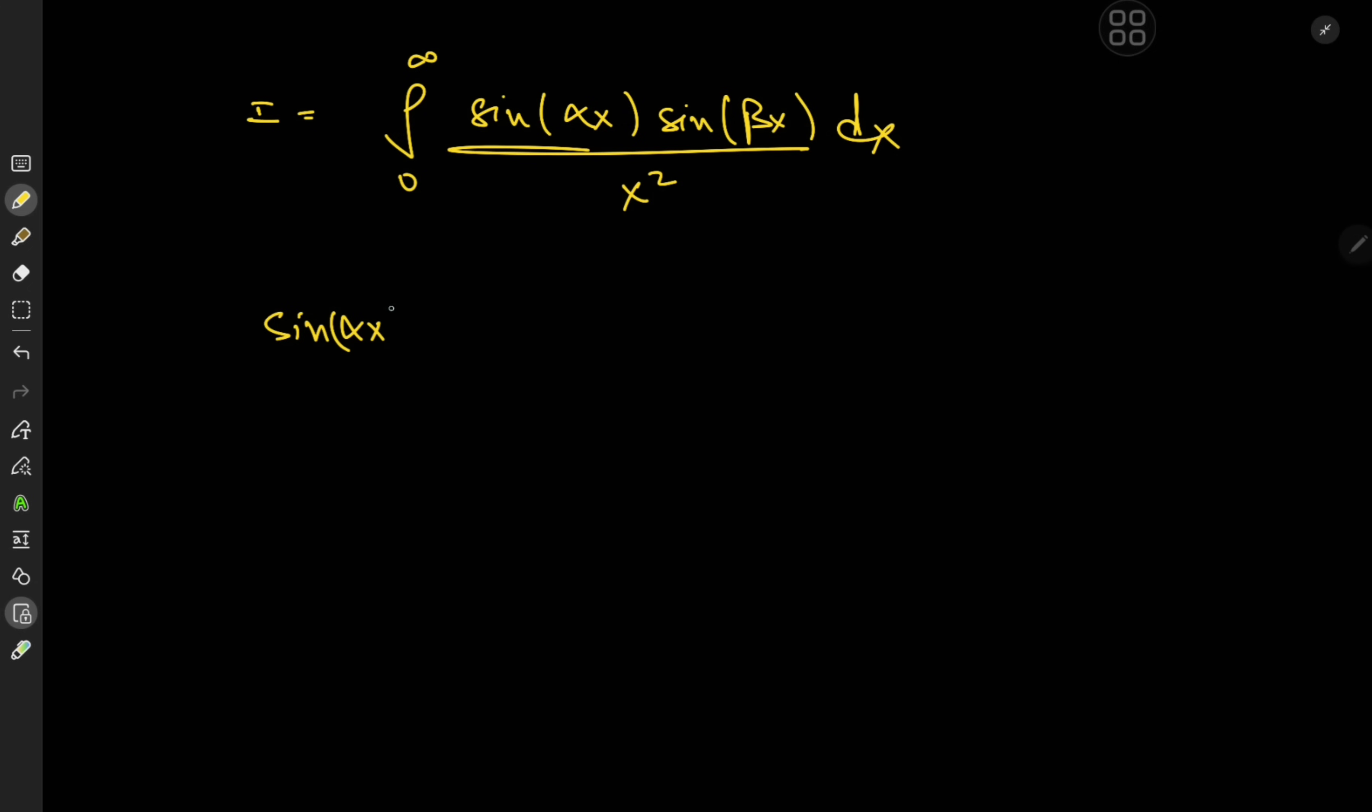That is we need sine of alpha x times the sine of beta x. So we can get a product of sine functions if we have one half of cosine of alpha minus beta x minus cosine of alpha plus beta x. That way the cosines cancel out and then you have the product of sines left behind.